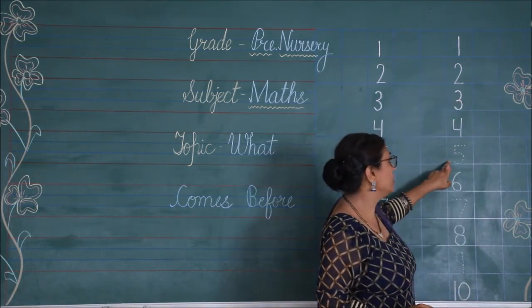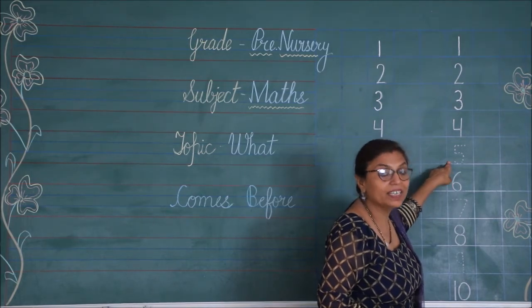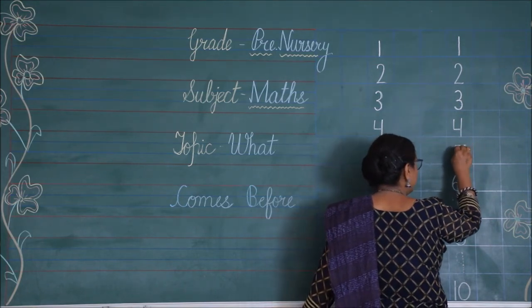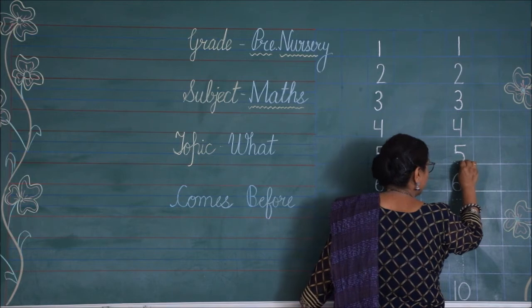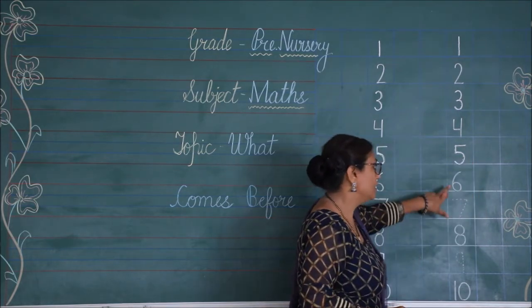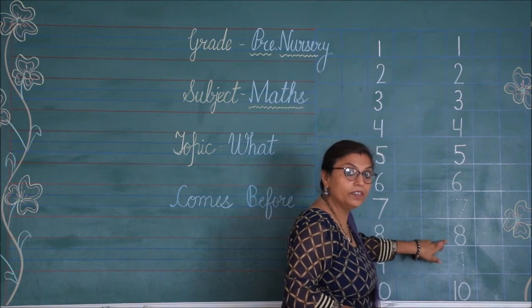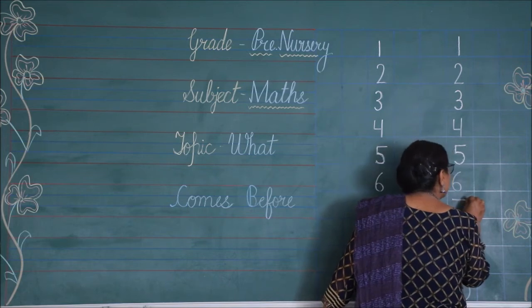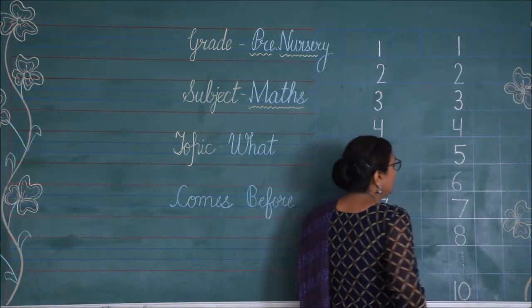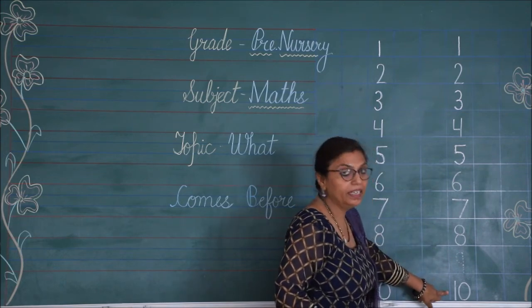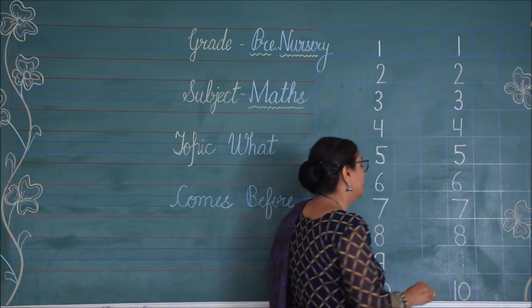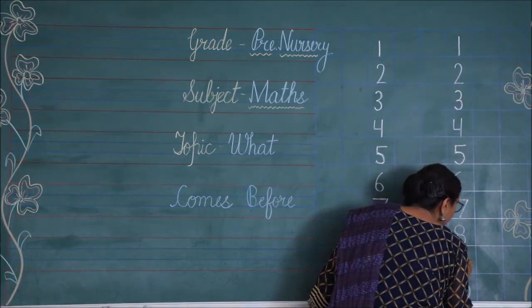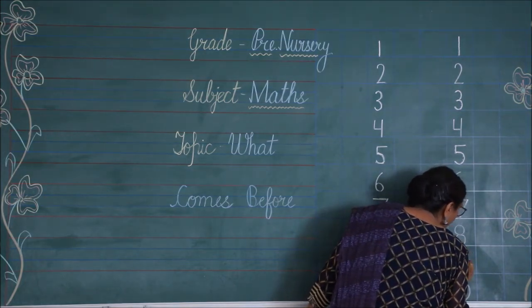And which number is before 6? 6 ke upar kaun sa number? 5 hai ga. So, 6 se pehle wala number, before wala number? 5. Sleeping line, standing line, and right curve makes the number 5. Now, 5, 6, 7, 8. 8 se pehle wala number? 7. So, now we will write number 7. Because number 7 will come before the number 8. And this is number 10. And 10 se pehle wala number? 9. So, number 9 will come before number 10. So, join the dots and make the number 9 here.